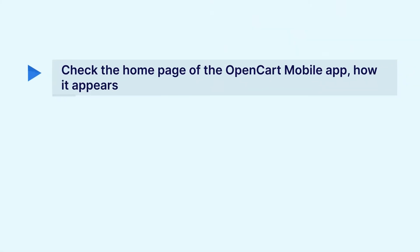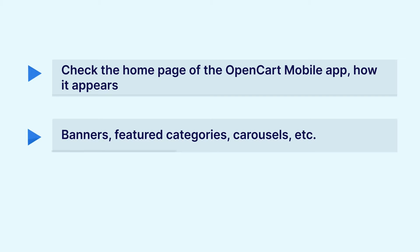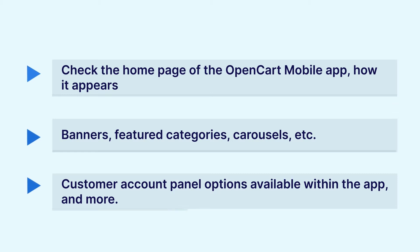For today's demonstration, we have already created a demo mobile application for the OpenCart web store that's live on the Google Play Store. We have also created a demo application for iOS devices available on the Apple App Store. In today's video tutorial, we'll be checking out the home page of the OpenCart mobile application — the banners, featured categories, carousels, and the customer account panel options.